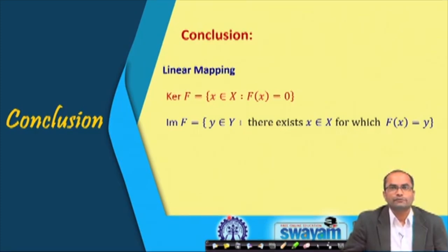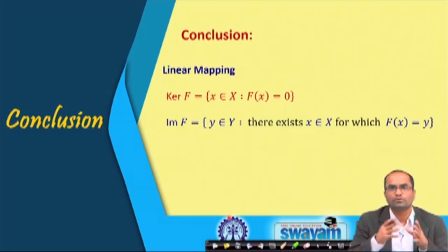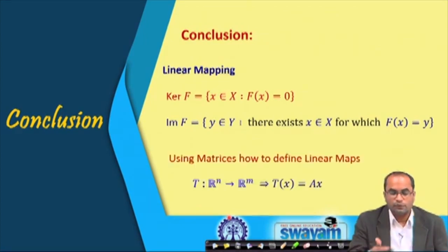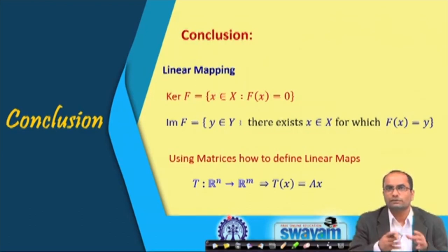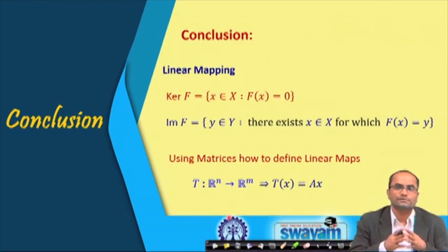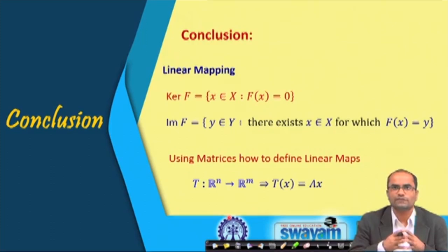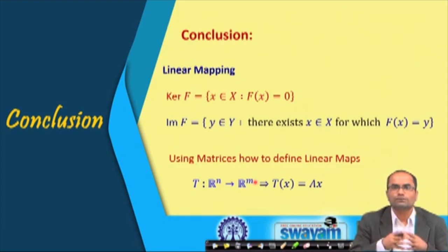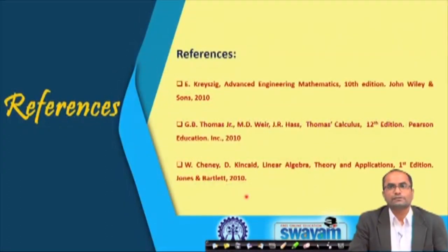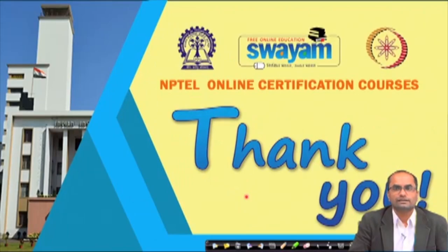In summary, today we computed the kernel and image of a linear map f and their dimensions. We also showed that any linear map T from Rⁿ to Rᵐ can be represented by a corresponding m×n matrix A, where T(x) = Ax. Working with such matrices is much easier, and we worked through several examples illustrating these concepts. Thank you very much.